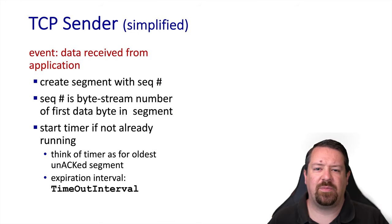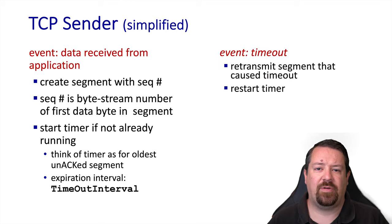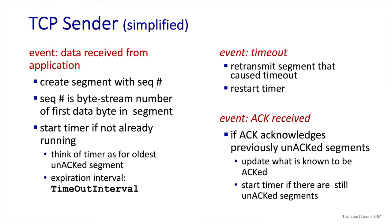Now we have all the pieces to understand the entire TCP protocol. It starts with data being received from the application to send, then creates a segment using the next sequence number in the byte stream, and starts the timer if it's not running already. This is fundamentally go-back-N and keeps the timer for the oldest unacknowledged segment. It sets the timeout interval based on the calculation we just saw. If a timeout does occur, the segment that caused the timeout is retransmitted and the timer is reset. When ACKs arrive, the sender window is updated and the timer is restarted if there are still segments outstanding.